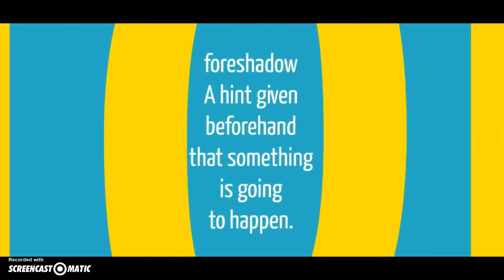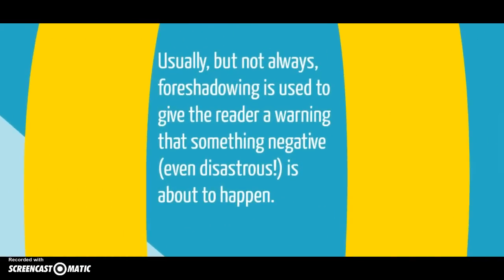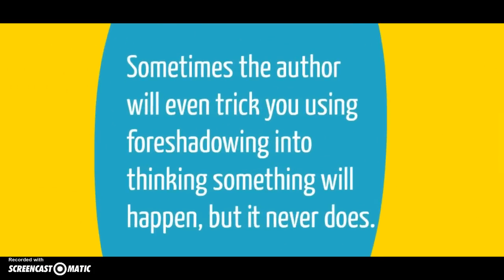The next thing we're going to look at is foreshadowing. Foreshadowing is a hint given beforehand that something else is going to happen later. The author might give you clues that a character is going to die, or that something really bad — or even something really good — is going to happen. It's a lot of inferencing. It's usually done through the setting, the character's actions, words, or a symbol — you've got to be on the lookout for it. It's usually given as a warning that something bad is going to happen, not always, but usually. And sometimes they'll make you think something else is going to happen, and then it never does, or something completely different happens.